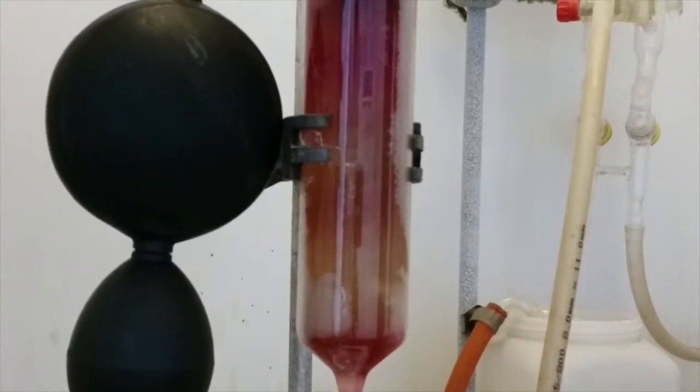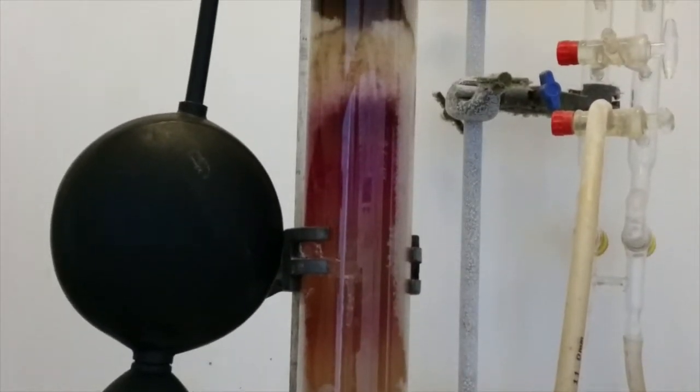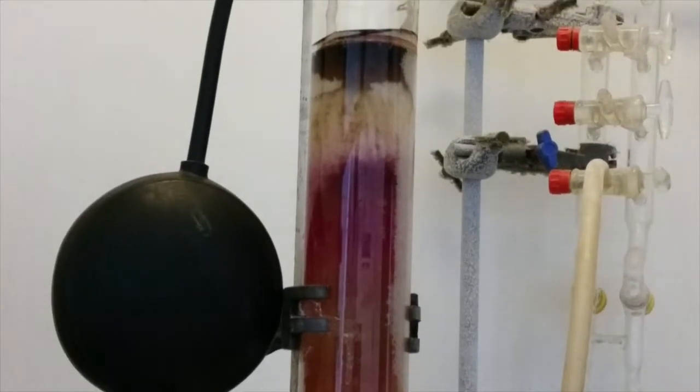Once you have confirmed the identity of the fractions you've collected you can vac down the ones that contain the product you want into one flask. This can then be precipitated to get the pure product.